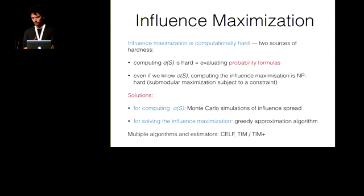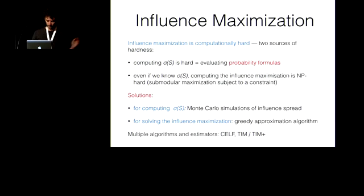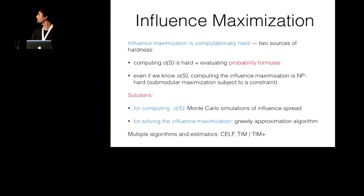There are basically two threads of research for solutions. For computing expected influence spread, the most used approach is Monte Carlo simulation with error guarantees. For solving the influence maximization problem, the greedy approximation algorithm gives a constant approximation. Algorithms like TIM and TIM+ are probably the most scalable for computing influence spread. But all this assumes we are given the influence graph and the probabilities.